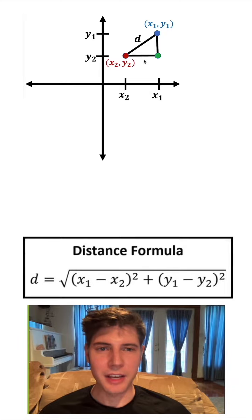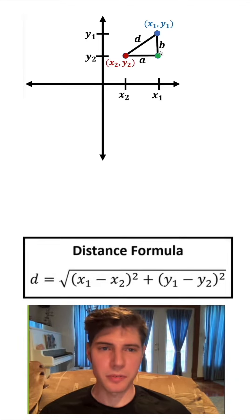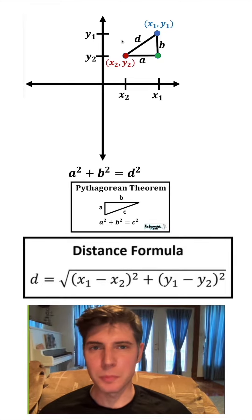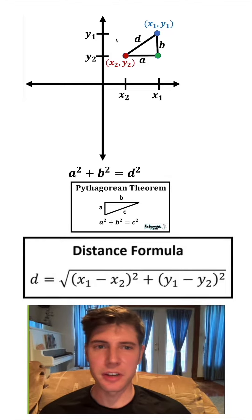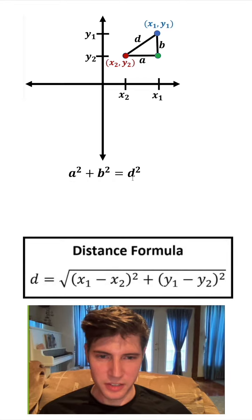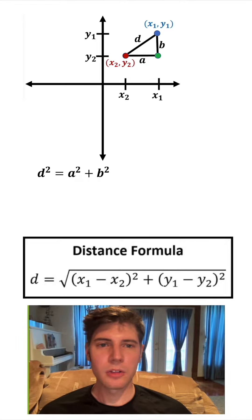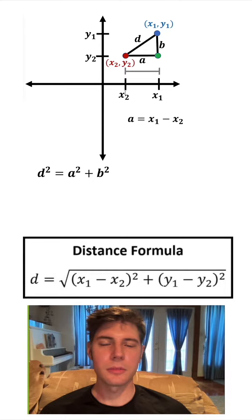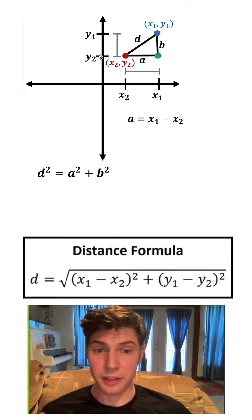If we call this bottom side A and this side B, since these are made up of vertical and horizontal lines, this is a right triangle. So we know A squared plus B squared equals D squared — it's the Pythagorean theorem, but we'll use D instead of C because D stands for distance. The length of A is the distance between x1 and x2, which is x1 minus x2. And side B is the distance between y1 and y2.